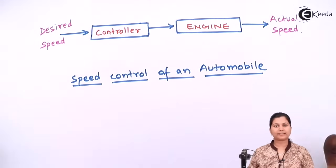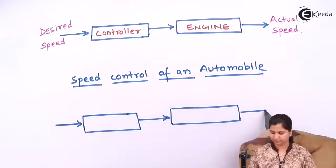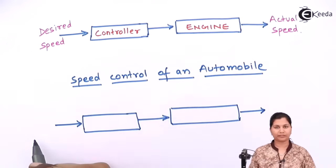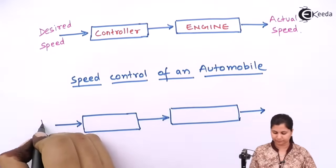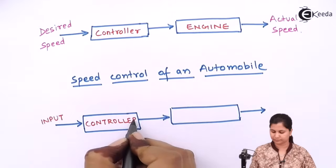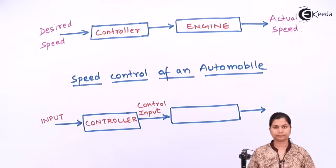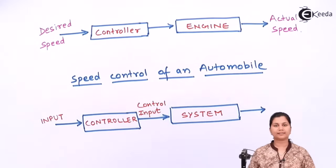If we draw the generalized block diagram of an open-loop control system, this is the input, this is the controller, and the output of the controller is the control input. This control input is given to the system. On this system there may be some disturbances acting on it — if the disturbances are produced inside the system they will be called internal disturbances, and there might be disturbances due to the external environment.